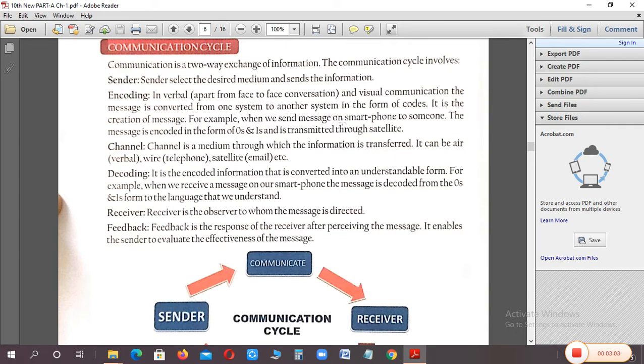For example, when we send message on smartphone to someone, agar hum kisi smartphone pe kisi ko message send kar rahe hain, the message is encoded in the form of 0 and 1 and is transmitted through the satellite. Humne to English mein type kar diya, but woh message convert ho jata hai 0 or 1 ki language mein. Because, computer ko 0 or 1 ki language, samaj mein aati hai, woh coded language mein convert hooke, transmit hota hai, through satellite. So, pehle to, yahan pe encode hota, pehle send kiya, phir encode hota.